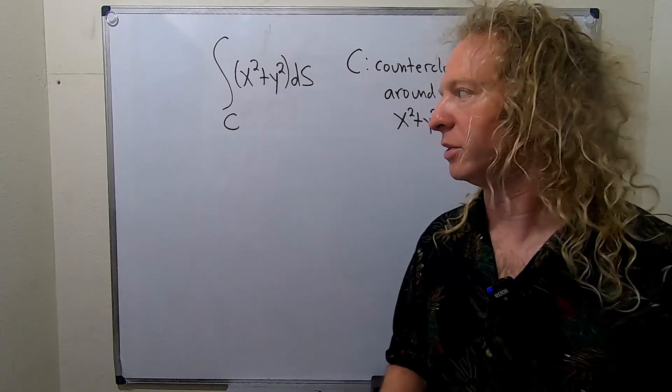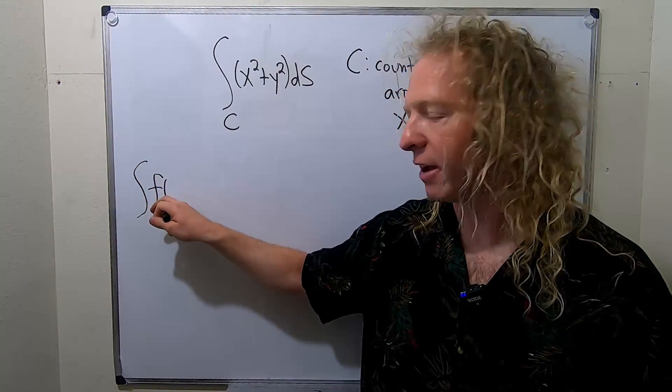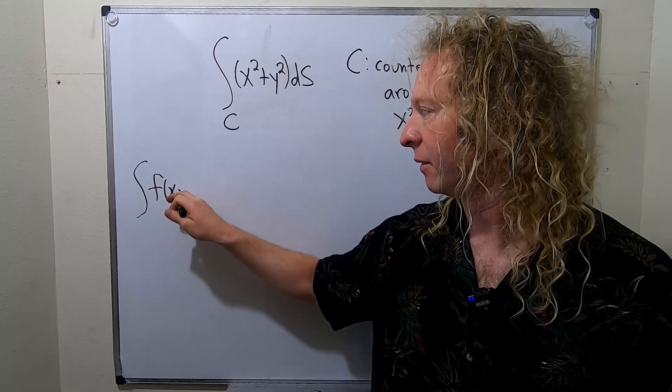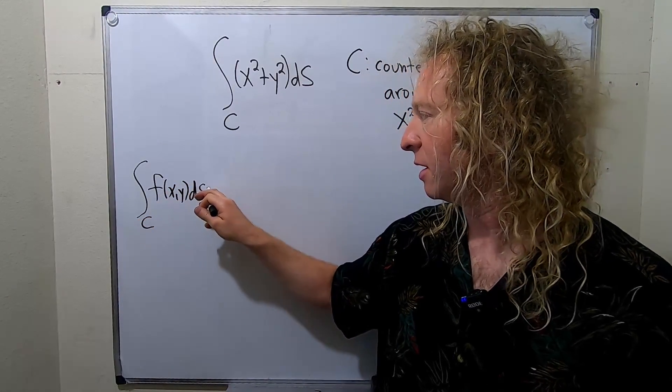First, let me give you the formula that we're going to use. So the formula is the following: we have the integral of f of xy ds over our curve c. And this, by definition,